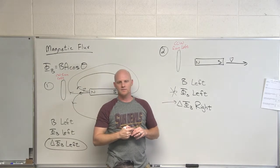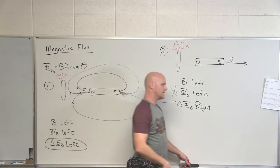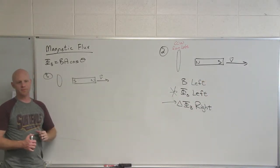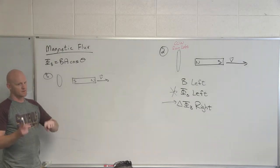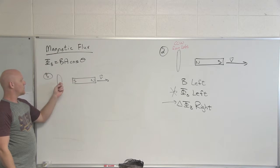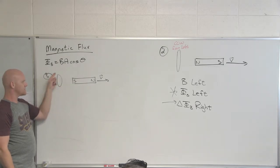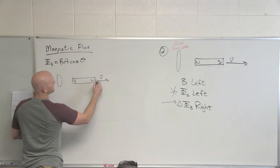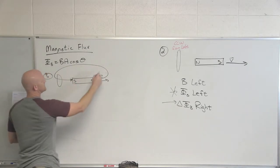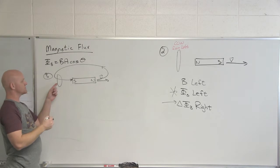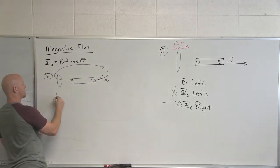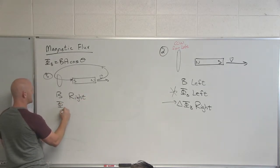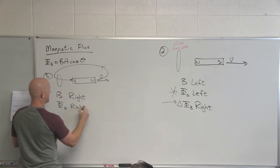Starting to make sense? Let's do a couple more. In problem three, what's changed relative to number two? The orientation of the magnet. So in this case, what direction do the magnetic field lines point at the location of the loop due to the bar magnet? They now point to the right. So our magnetic field points to the right at the location of the loop, and therefore the magnetic flux points to the right.